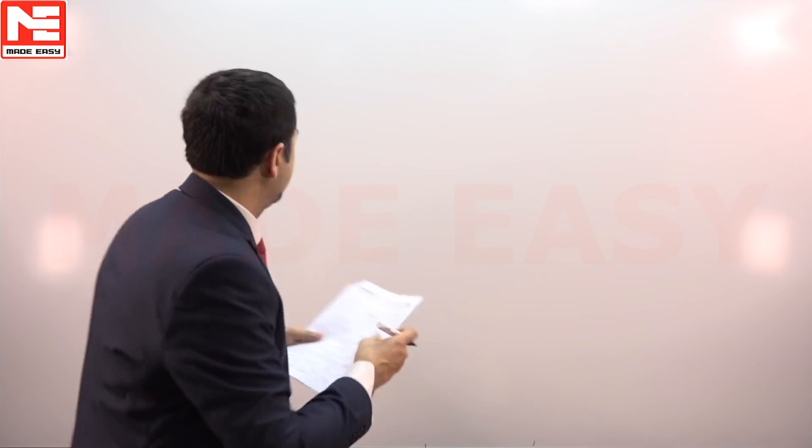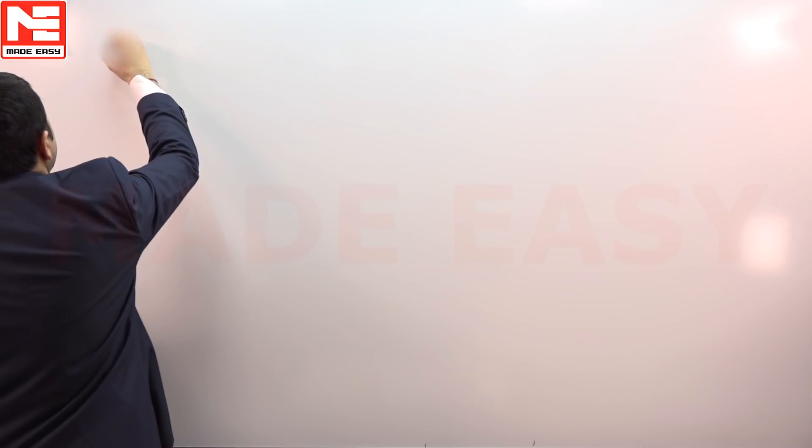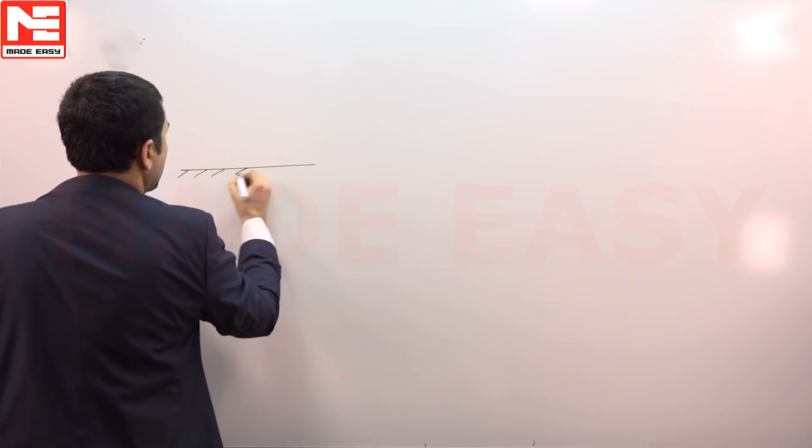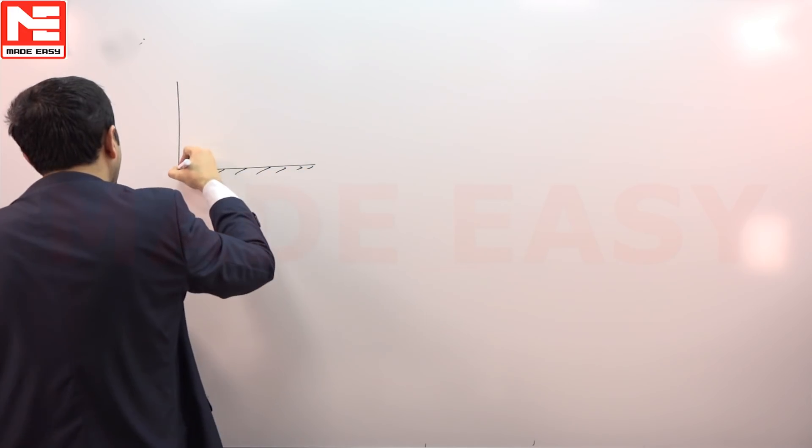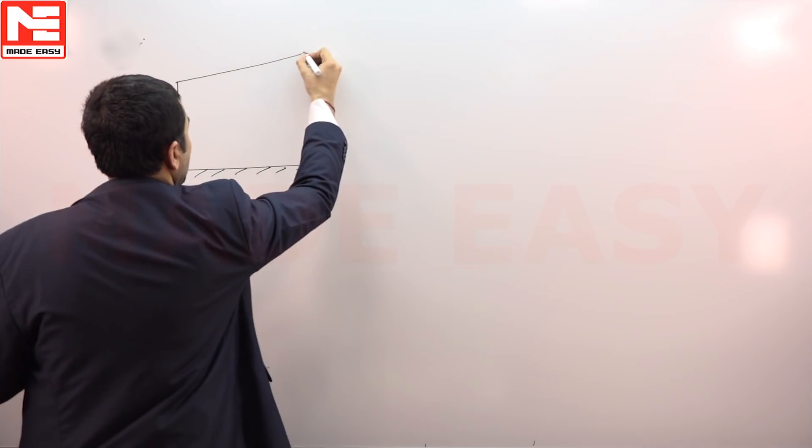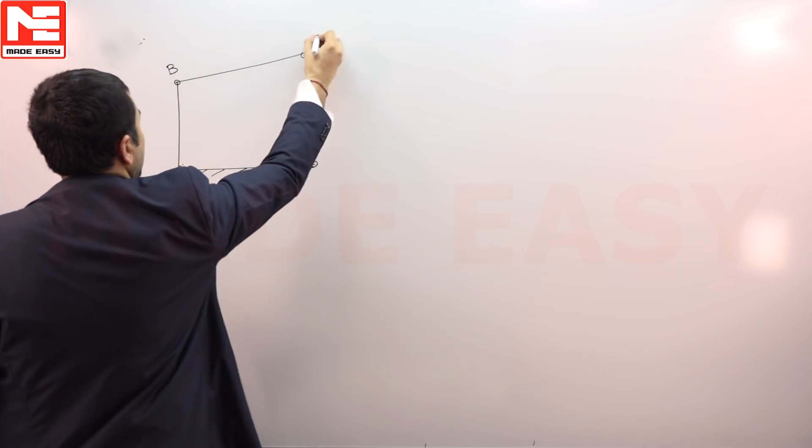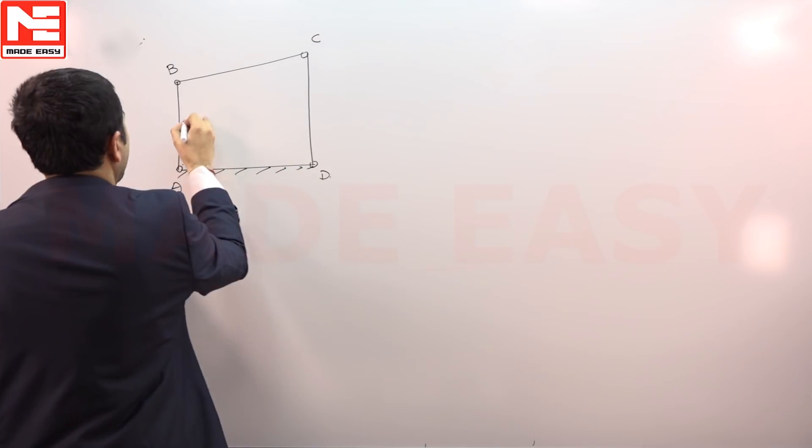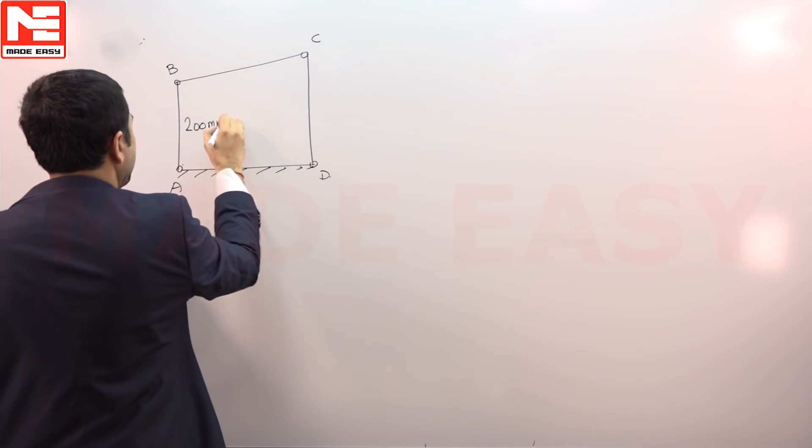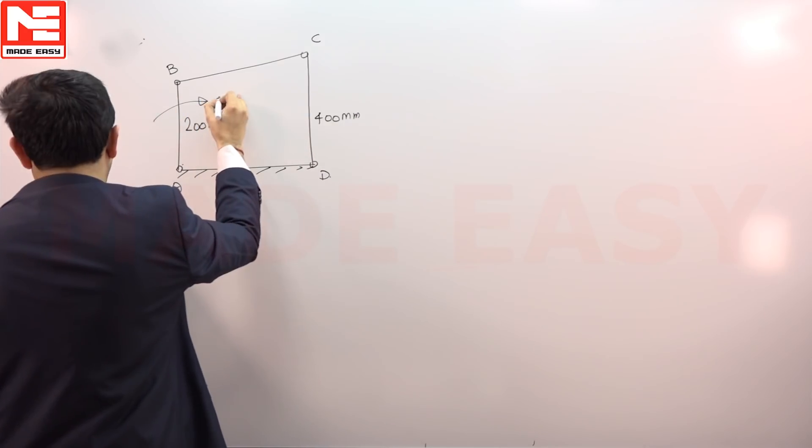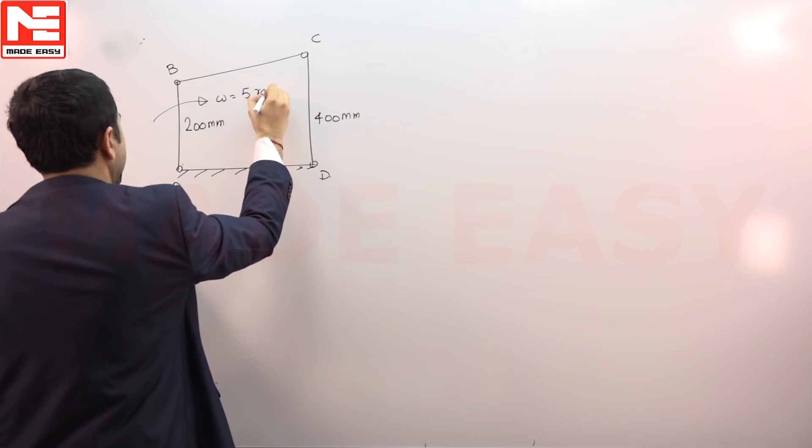ABCD is a 4-bar mechanism as shown in figure. It is a velocity problem. ABCD, this is 200 mm and this is 400 mm, and this omega is given as 5 radian per second.